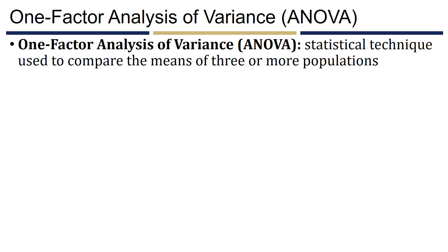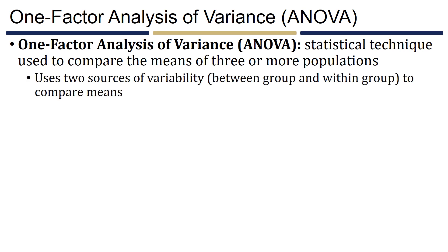What we need is an inferential technique that allows us to compare multiple levels of a categorical variable — the section of the class in this case — with no continuous predictors. One-factor analysis of variance, or one-factor ANOVA, is a statistical technique used to compare the means of three or more populations using two different sources of variability: between-group variability and within-group variability.